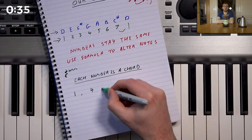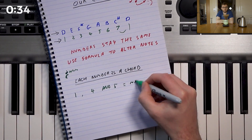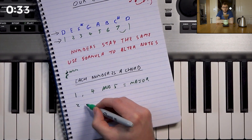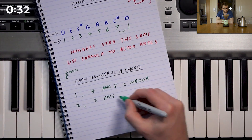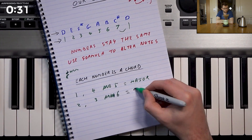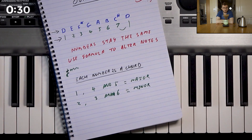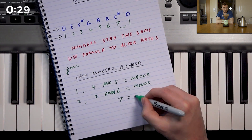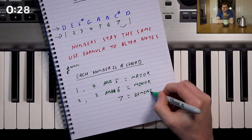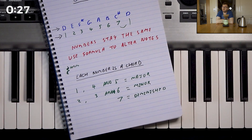Here's what you need to stamp into your brain: chords one, four, and five are major chords. Two, three, six are minor chords. Chord seven is a diminished chord, but don't worry about that for now. Chords one through six are the chords most commonly used and we hear most often.